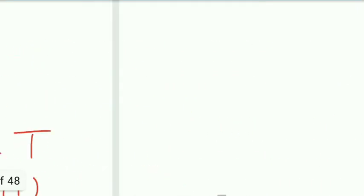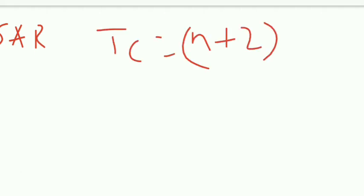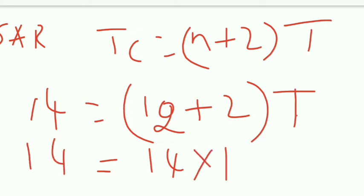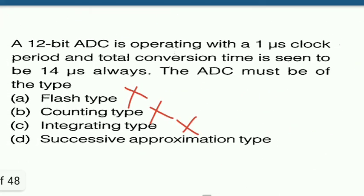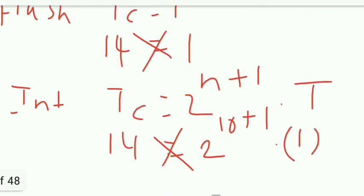For successive approximation ADC, tc = (n + 2) × t. With n = 12 and t = 1 microsecond, tc = 14 × 1 = 14 microseconds, which equals the given conversion time of 14 microseconds. So the answer is option D: successive approximation type ADC.